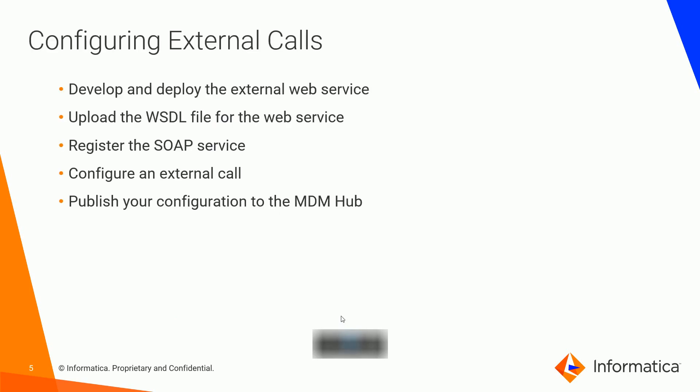Now let's quickly check the steps required for configuring external calls. First, you develop and deploy your external web service as SOAP calls. Next, you upload the WSDL file for the SOAP service. Then you register the SOAP service through the provisioning tool. After that, you define the external calls and specify the business entities for which you want to implement them, and what service phase you want to configure. Once all steps are done, you publish your configuration to MDM.